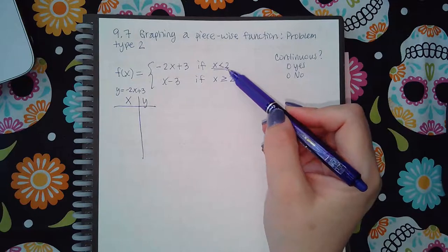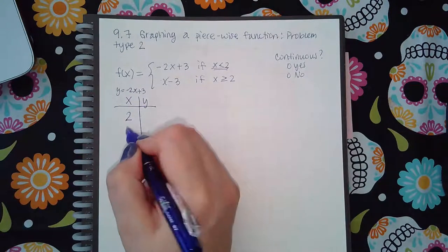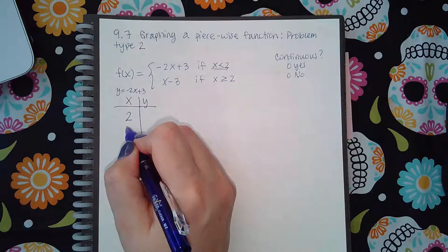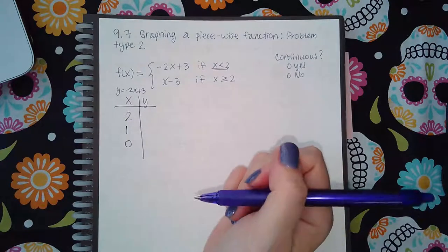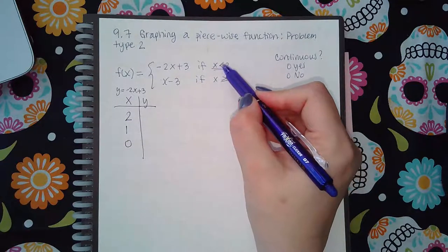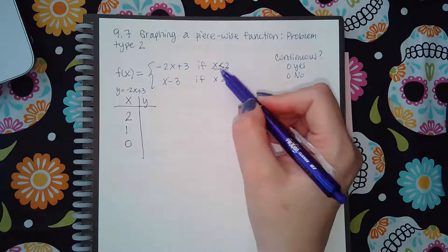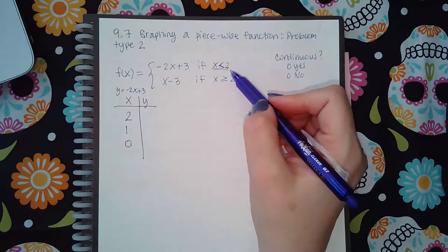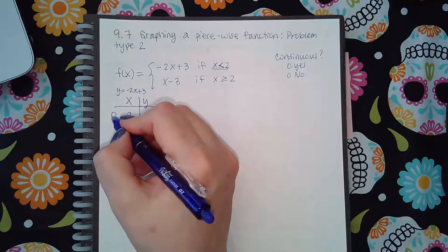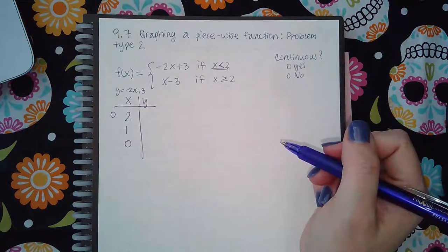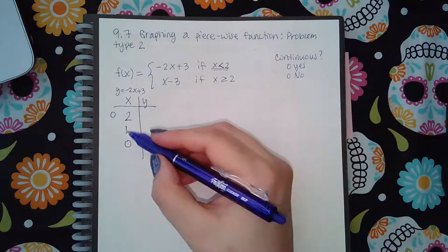Because this is a strictly less than and not less than or equal to 2, when I draw this point I'm going to have to do an open circle to indicate that I'm going up to this particular point but I'm not including that point on my graph.